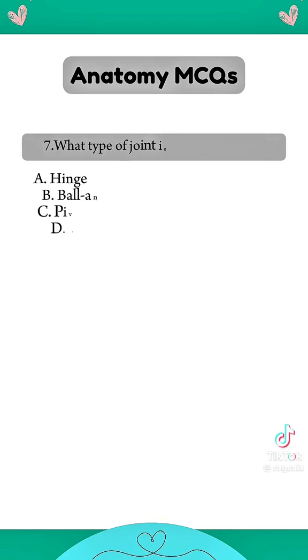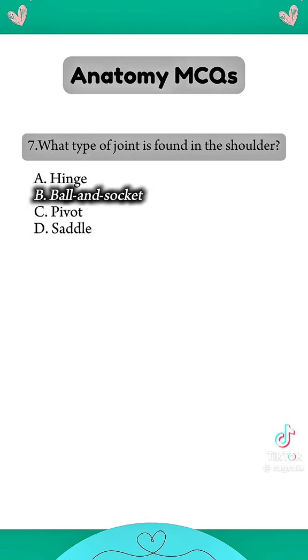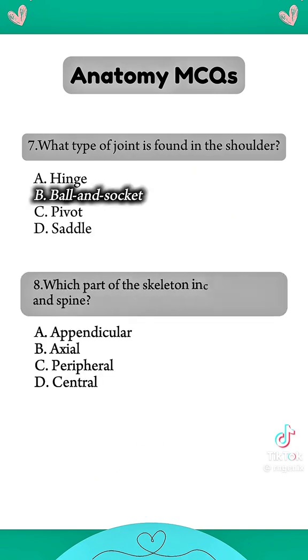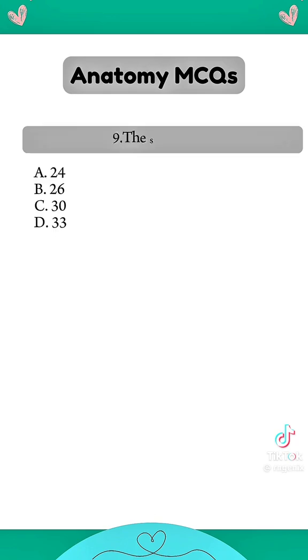What type of joint is found in the shoulder? Which part of the skeleton includes the skull and spine? The spine is made up of how many vertebrae?